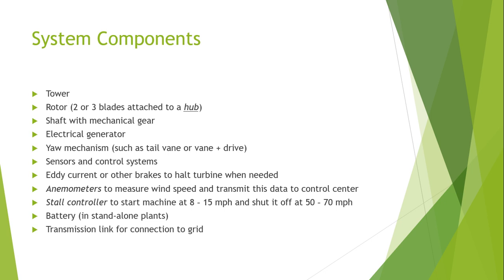The sensor and control system allows us to control the turbine by controlling the generator speed, the blade angle adjustment, and the rotation of the entire windmill. Blade angle adjustment and turbine rotation are also known as pitch and yaw control.